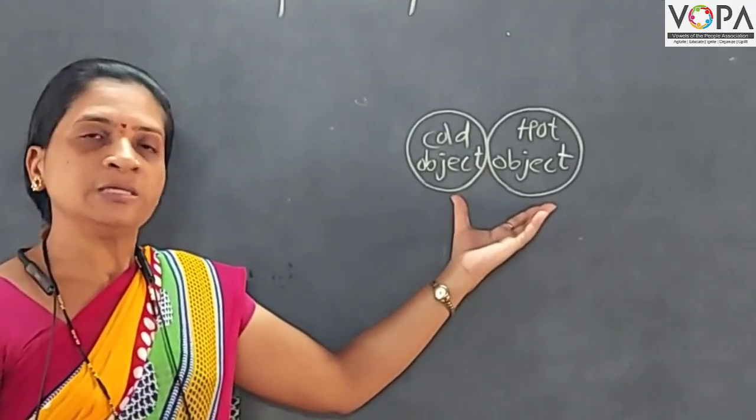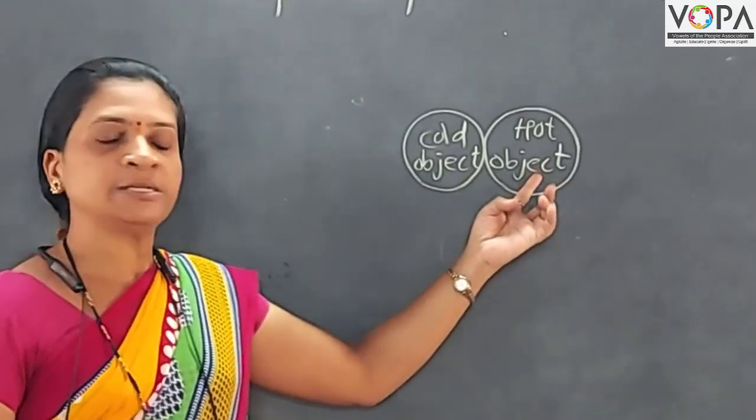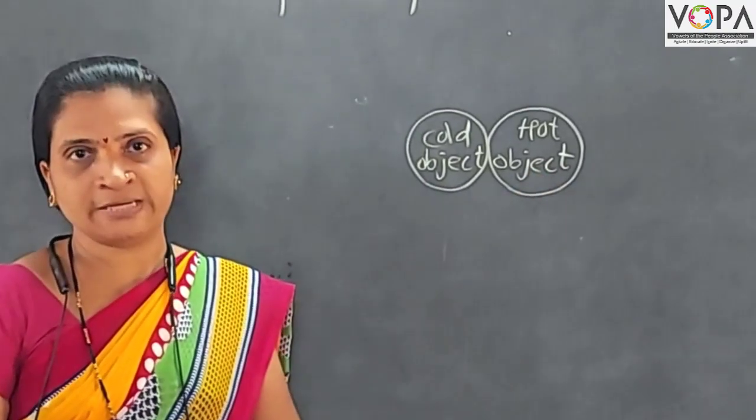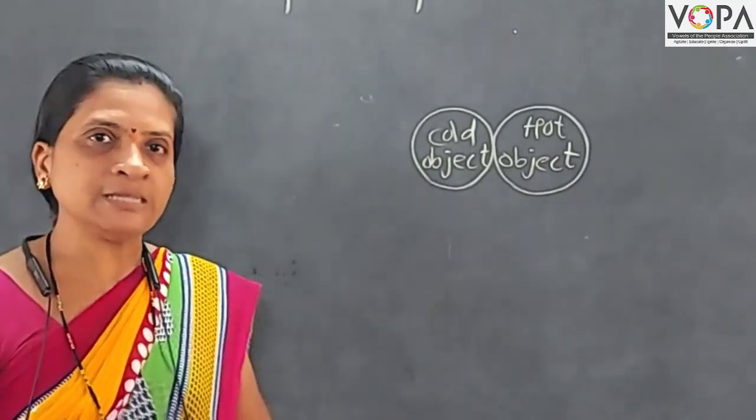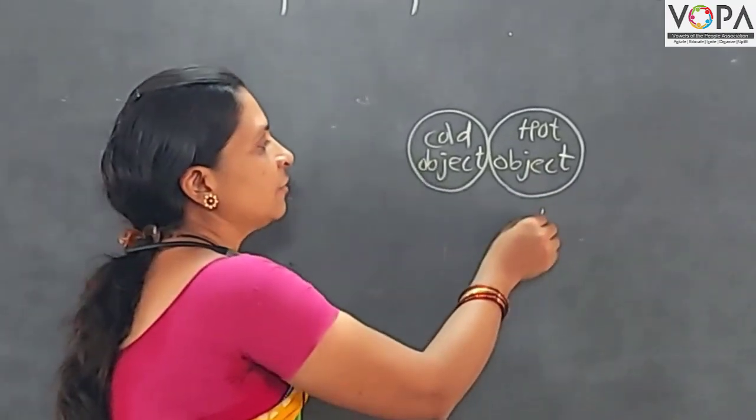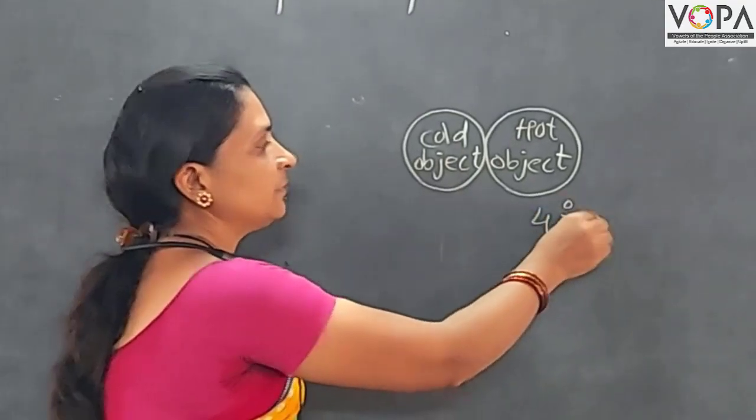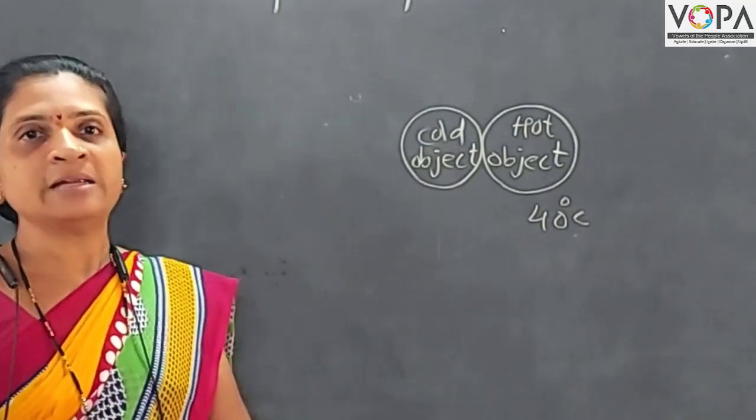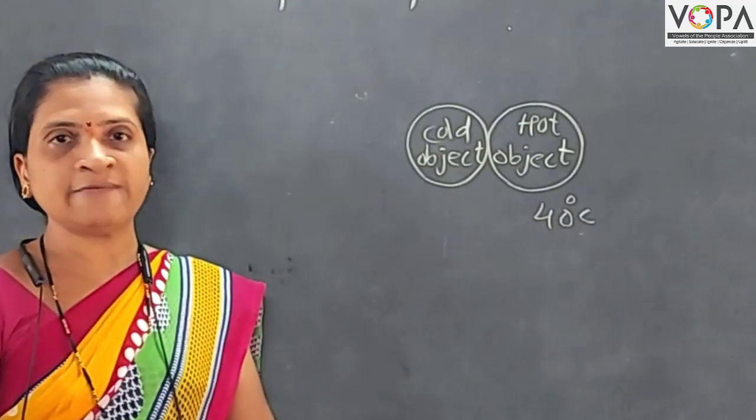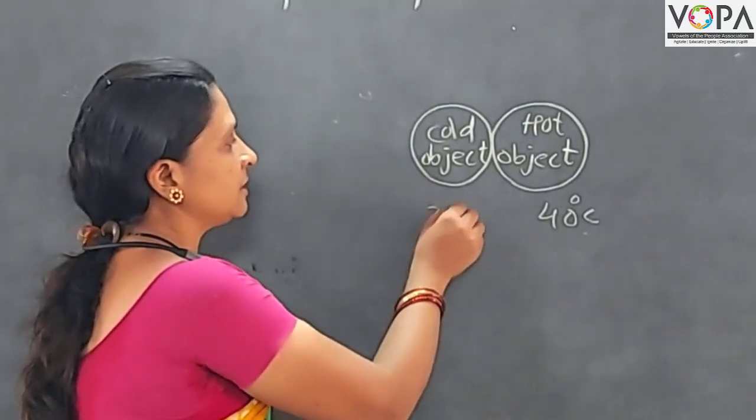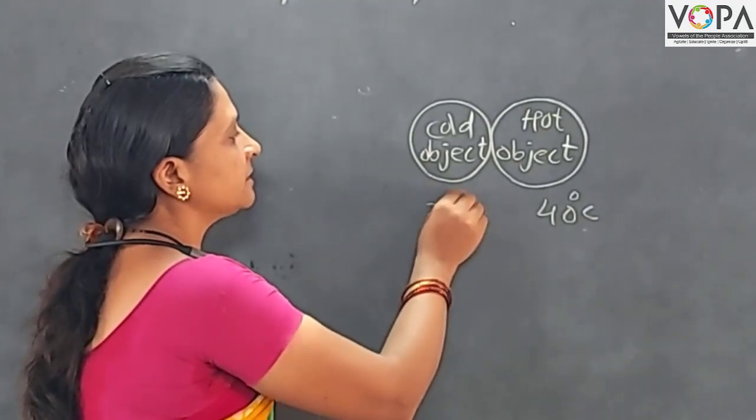And what happens? Suppose first we take the temperature of this hot object. Let us consider this temperature may be 40 degree Celsius. Hot area may be. And cold object having temperature suppose it is 20 degree Celsius.